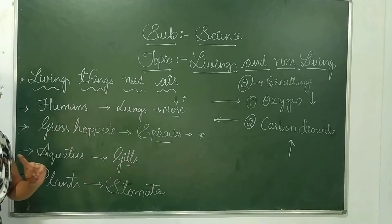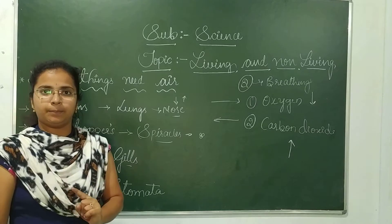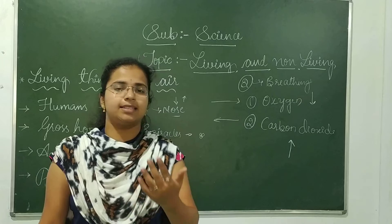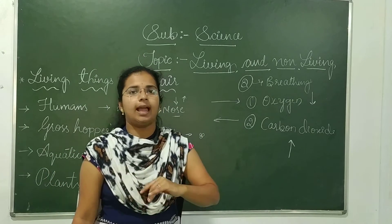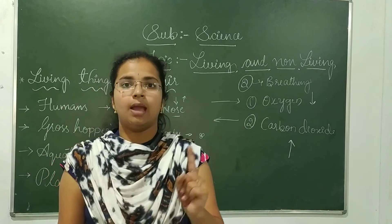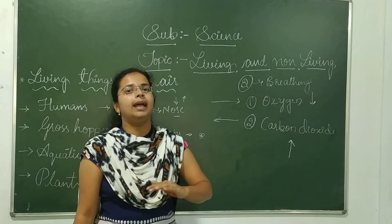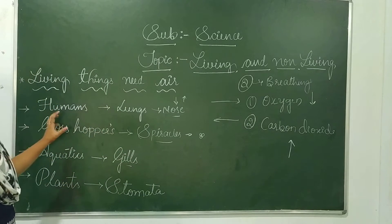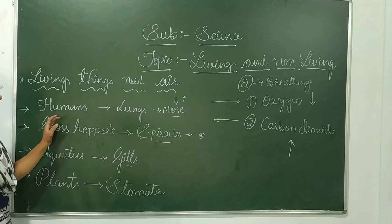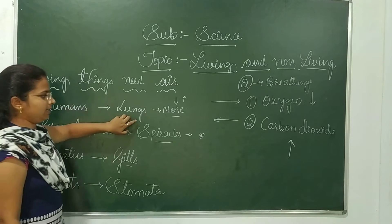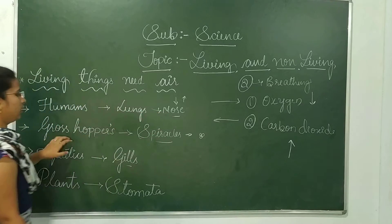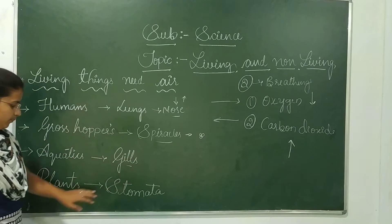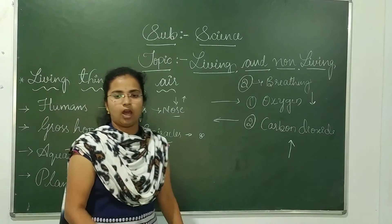I will repeat it once. Breathing is a process where living organisms take in air. Human beings and living organisms except plants take in oxygen and give out carbon dioxide. But plants take in carbon dioxide and give out oxygen. The special organs for breathing in humans are the lungs, especially the nose; in grasshoppers, spiracles; in aquatic animals, gills; and in plants, stomata. These are all the organs modified in living organisms to breathe.